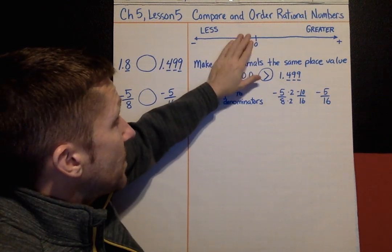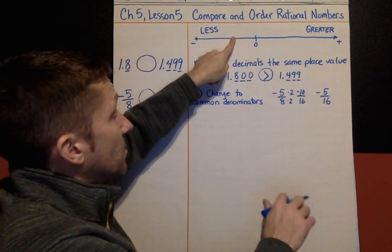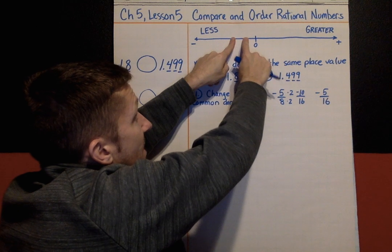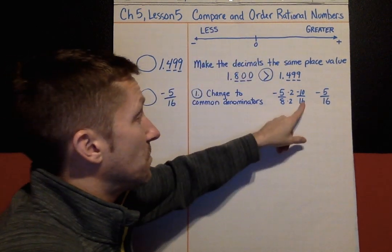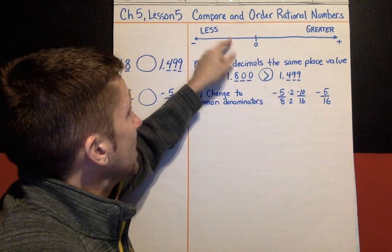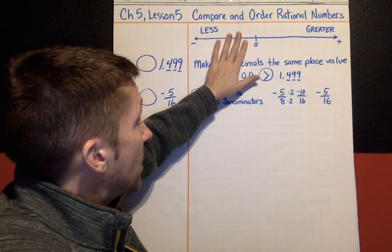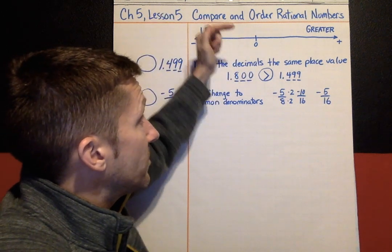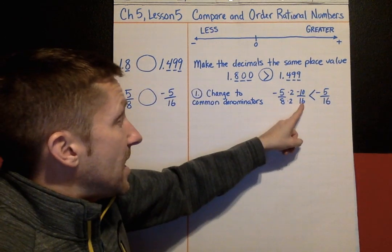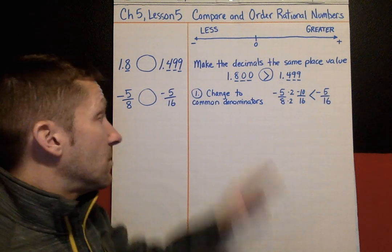Think about where these go on the number line. Negative 10/16 would be further out to the left, and negative 5/16 is not as negative — it's closer to zero. So negative 5/16 is greater than negative 10/16. Negative 10/16 is more in the negative direction, which means it is less. So negative 5/8 is less than negative 5/16 — a tricky idea with negatives.